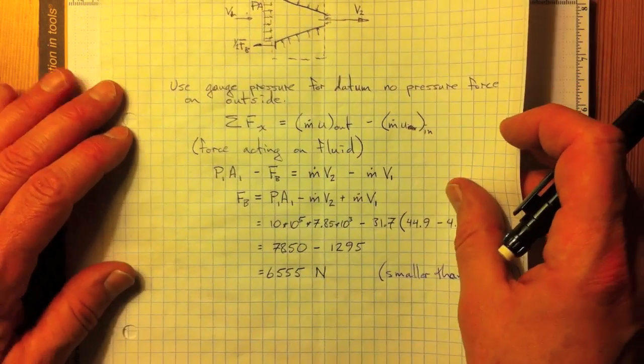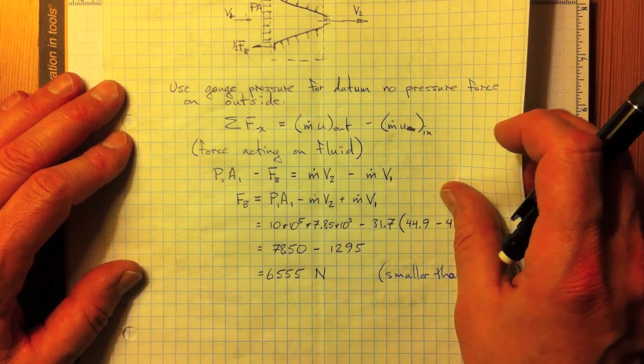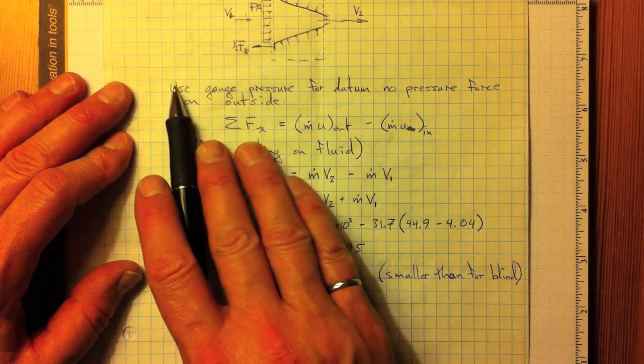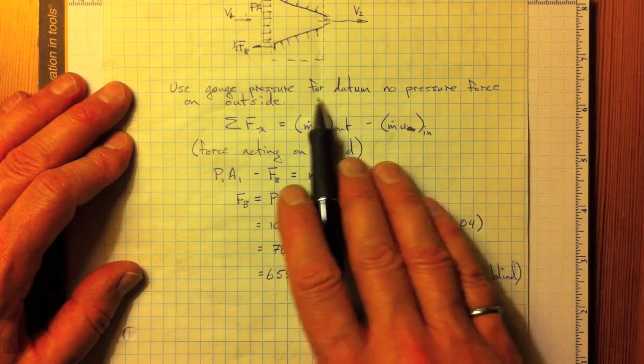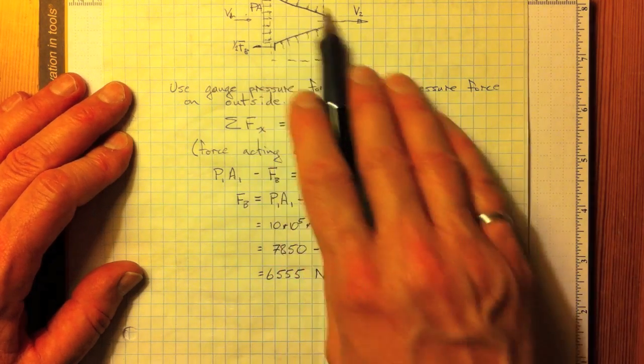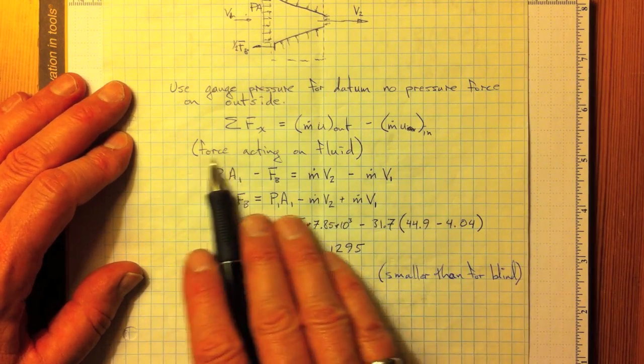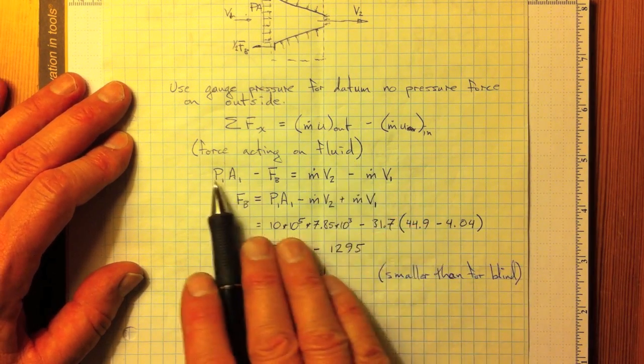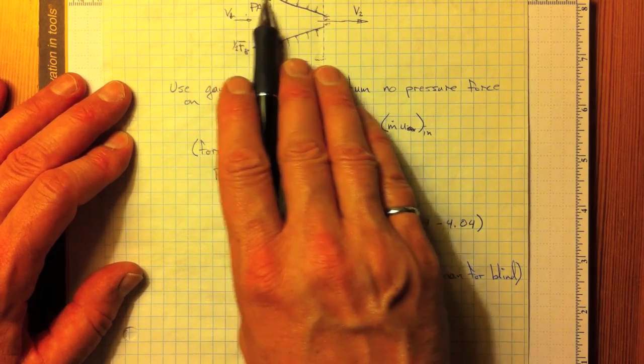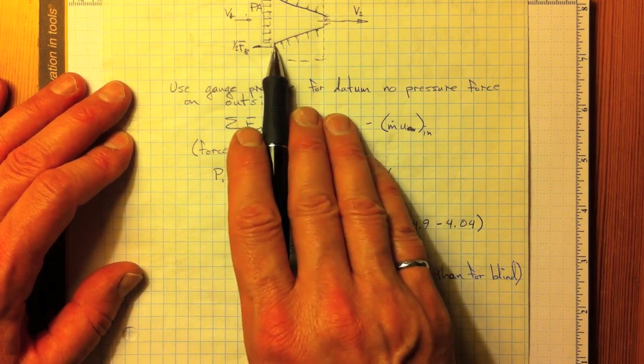If we apply the momentum equation to figure out what the force actually acting is, using the gauge pressure for our datum so that there's no pressure force on the outsides of the nozzle, then the total force acting on the fluid, P1 A1, there's a force acting here, pressure over the area.